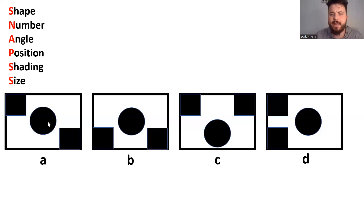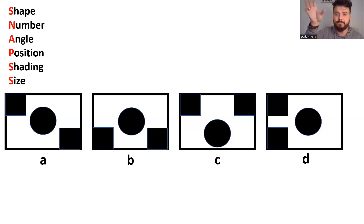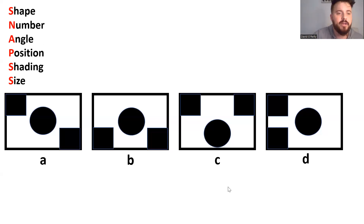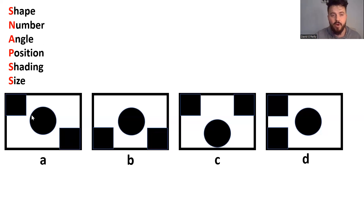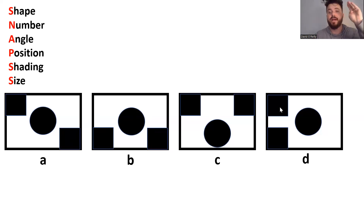The angle doesn't appear to change because the squares are the same orientation in each object, and the circle is the same as well. So nothing in terms of angle changing. But position is different — if we look at the squares, they go to different places in each object. In a: top left and bottom right. In b: bottom left and bottom right. In c: top left and top right. In d: top left and bottom right.